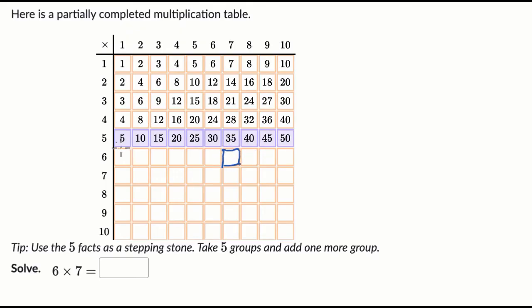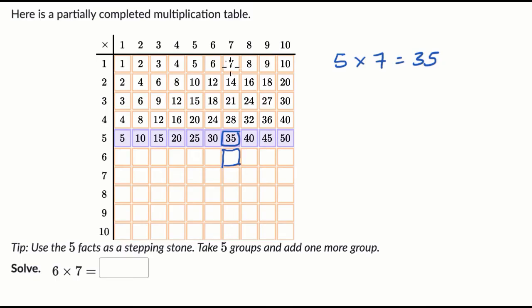So what do I mean by that? Well, if you look at this right over here, they tell us that five times seven is 35. Five times seven is equal to 35. And if you look at this column here, you can see that you can view this as adding seven every time. Seven times one is seven. Seven times two is 14.